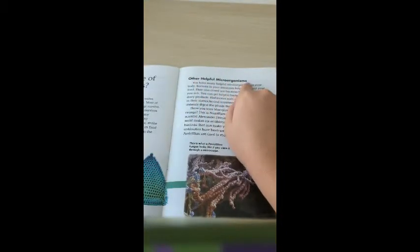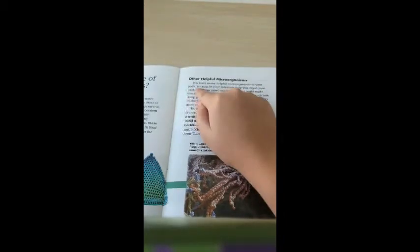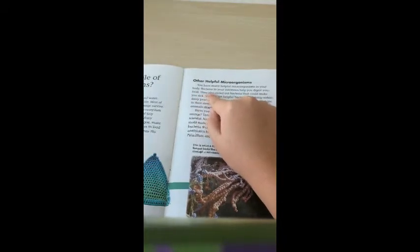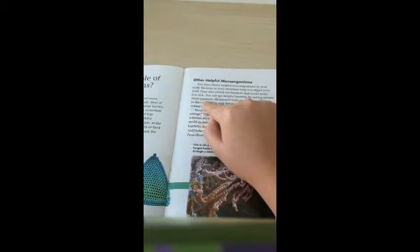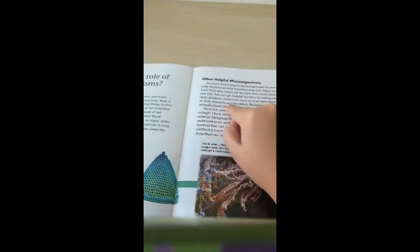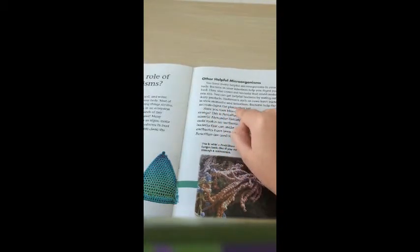Other helpful microorganisms. You have many helpful microorganisms in your body. Bacteria in your intestines help you digest your food. They also crowd out bacteria that could make you sick. You can get helpful bacteria by eating certain dairy products. Herbivores, such as cows, have bacteria in their stomach and intestines. Bacteria help the animal digest the plants they eat.